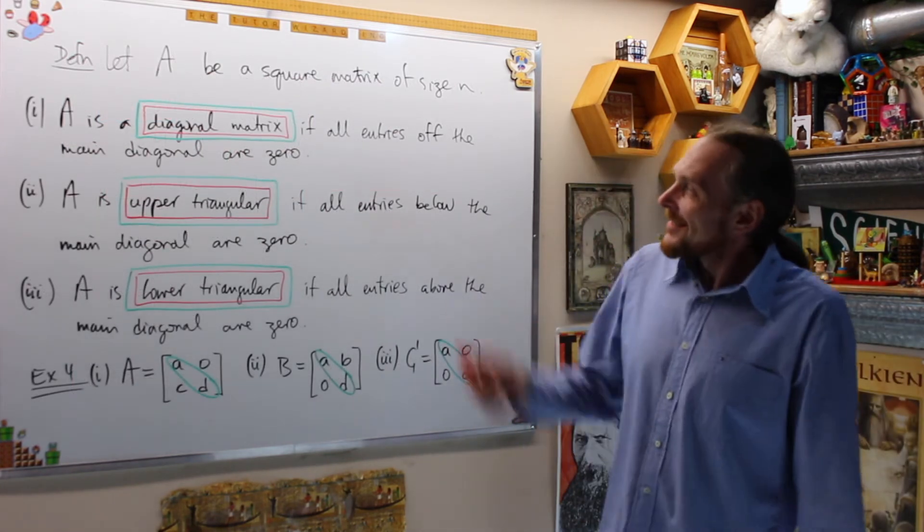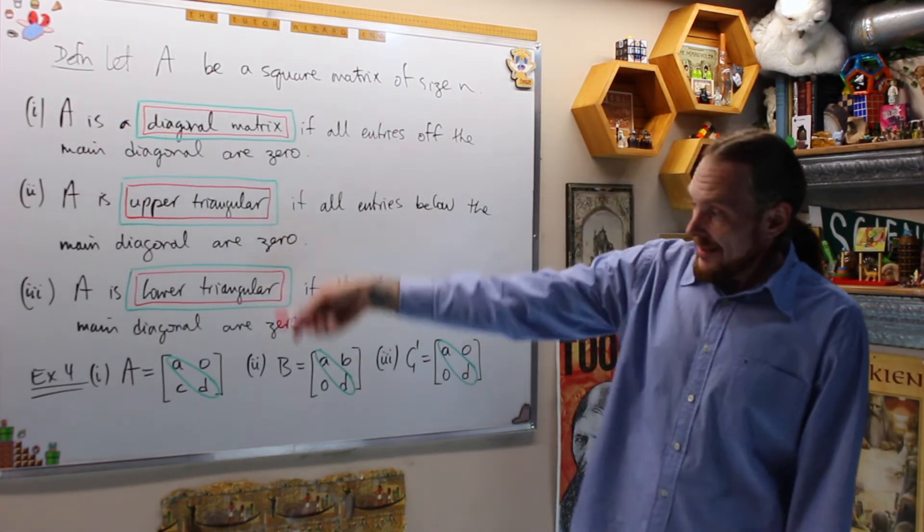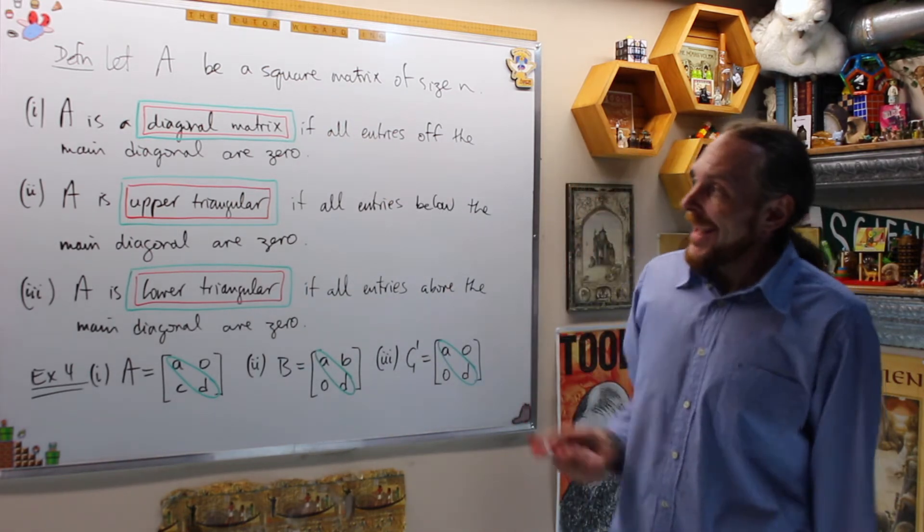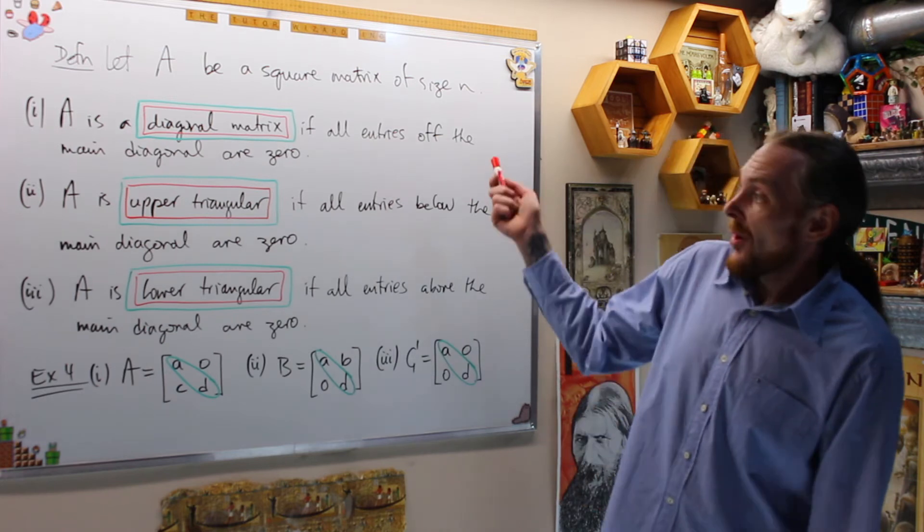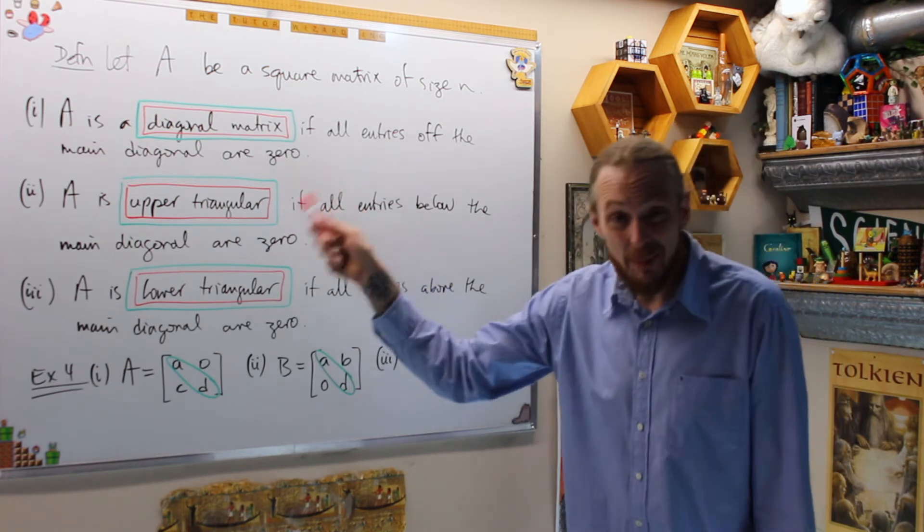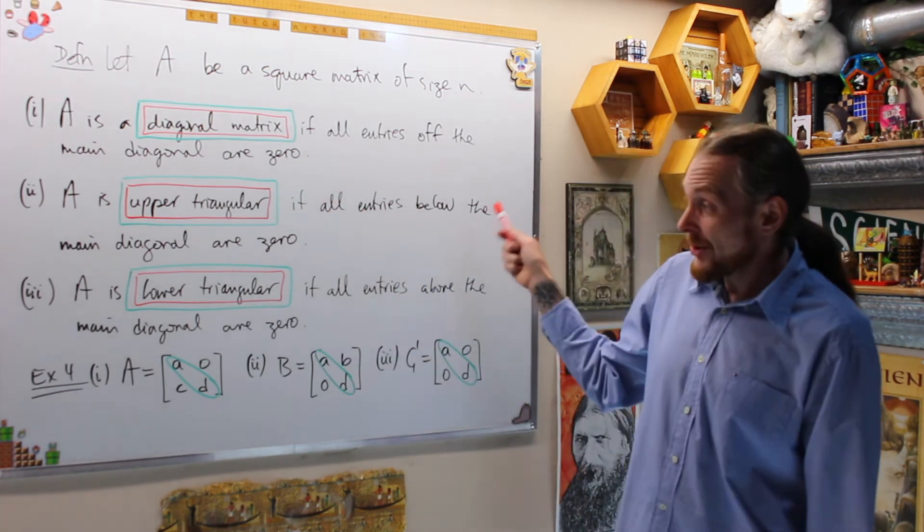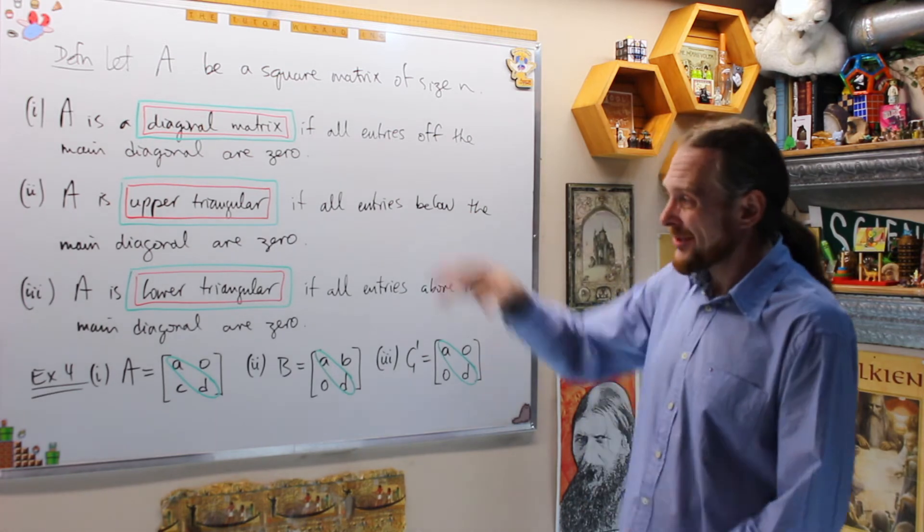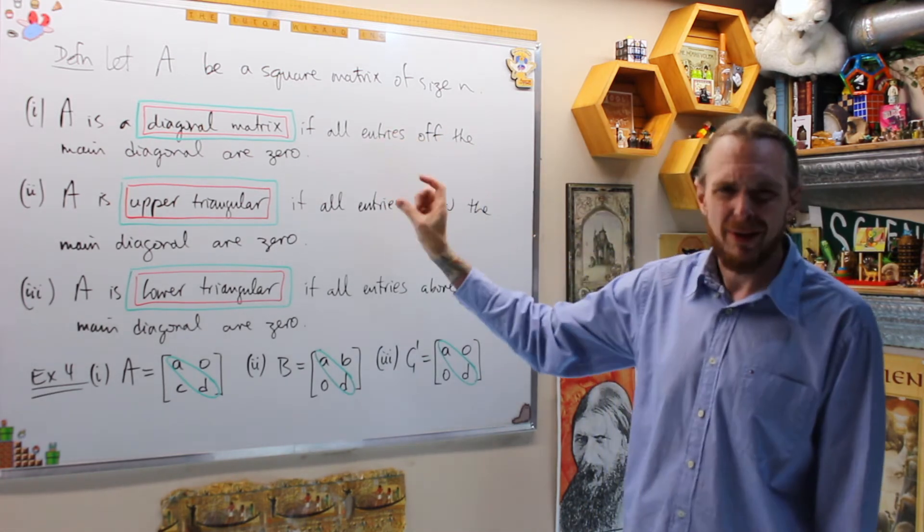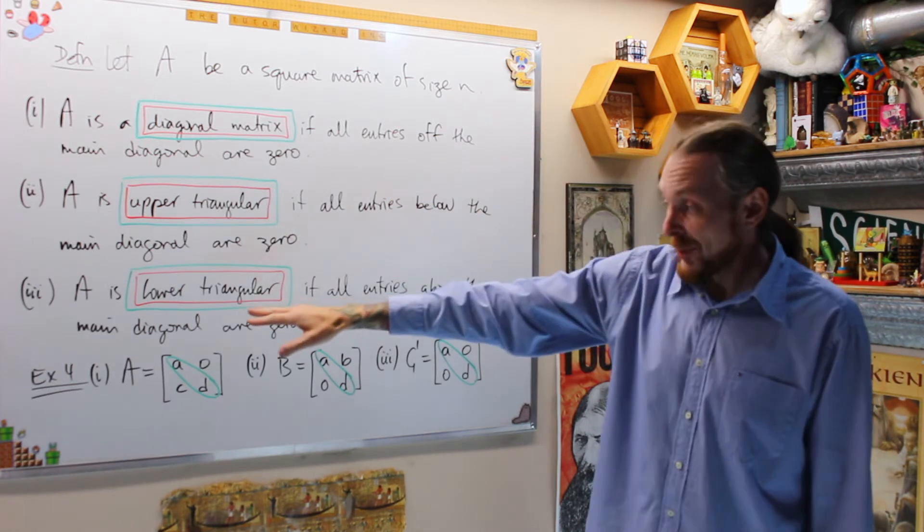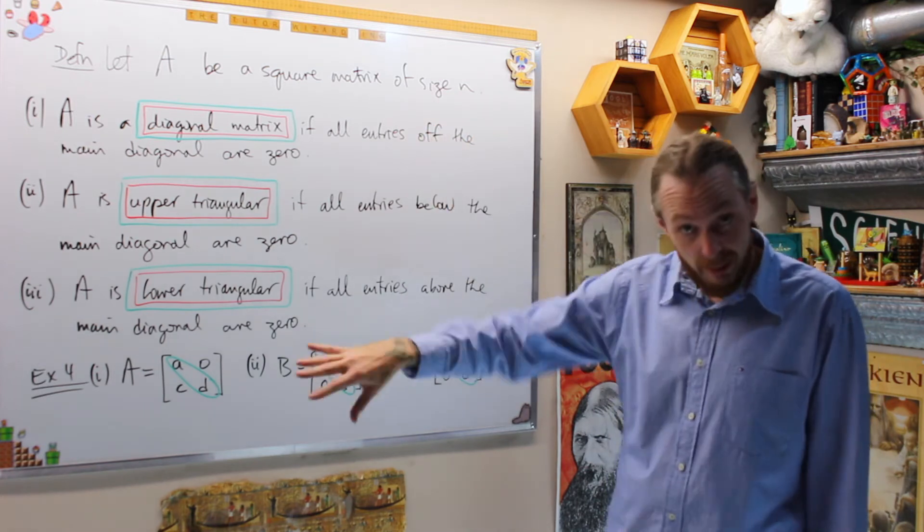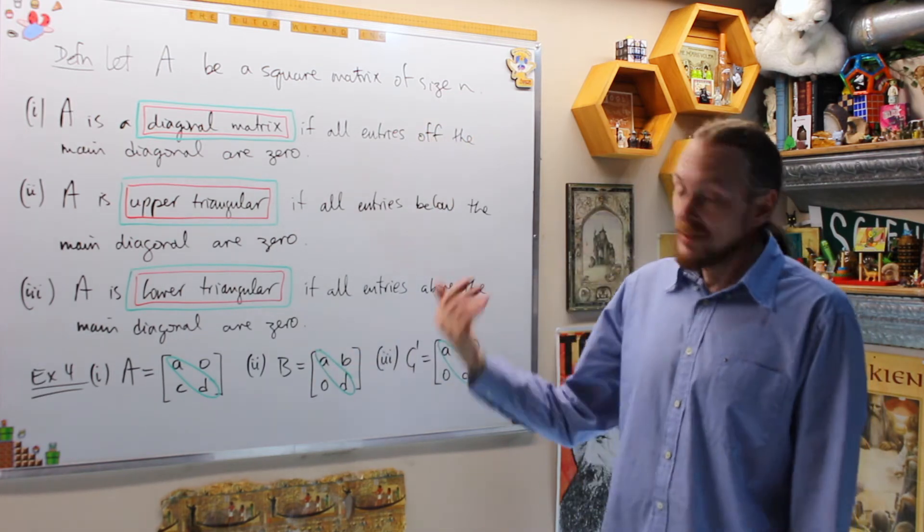Okay, next is let A be a square matrix of size n. This time we have three things in the definition. A is a diagonal matrix if all the entries off of the main diagonal are zero. A is called upper triangular if all the entries below the main diagonal are zero. We call it lower triangular if all the entries above the main diagonal are zero because the information will be in the lower triangle.